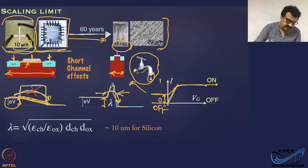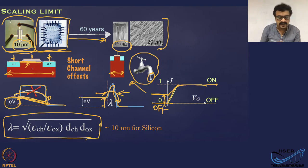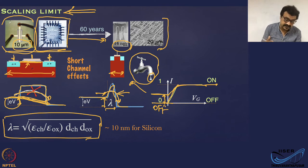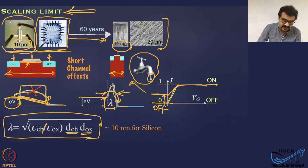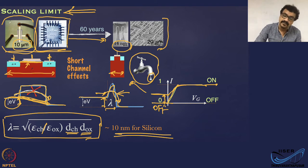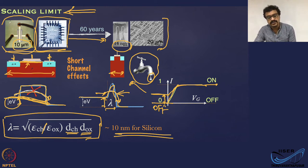One can calculate the minimum dimension for scaling, called lambda, given by a formula involving the dielectric constants and thicknesses of the channel and oxide layers. For silicon, this is approximately 10 nanometers. Current technology is at 7 nanometers and the previous generation was around 10 nanometers, meaning we are almost at the scaling limit.